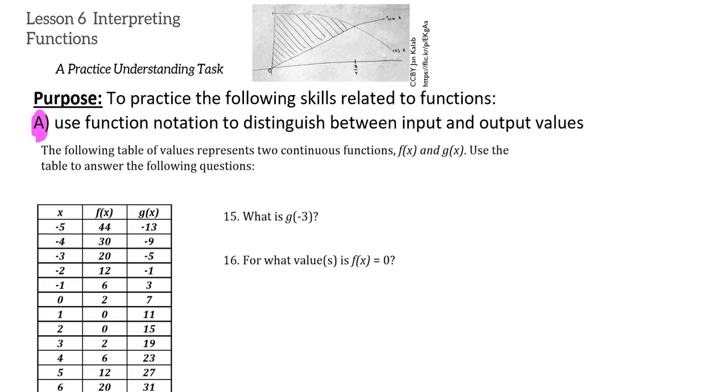For this video I'm going to be bouncing around from problem to problem, so if you'll look with me at problems 15 and 16. Since we're trying to distinguish between input and output values, it's important to consider that in question 15 it says what is g of negative 3. It's important to recognize that negative 3 is an input, so we're given an input and we're asked to find the associated output. So at negative 3 input, we can see the g of x output is negative 5, so g of negative 3 is negative 5.